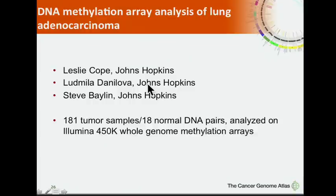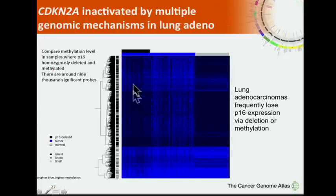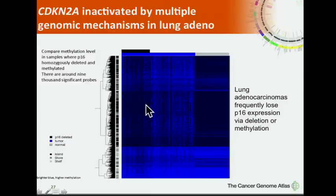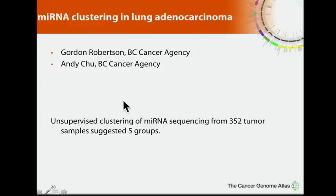On DNA methylation analysis, led by Leslie Cope, Ludmila Danilova, Steve Baylin, and Jim Herman at Johns Hopkins, one of the key findings is that CDKN2A — similar to squamous cell lung carcinoma — is one of the most frequently inactivated genes by mutation, by copy number alteration, and by methylation. We thus see multiple means of inactivation of CDKN2A.